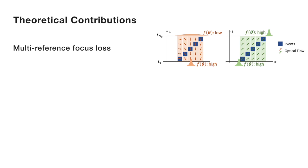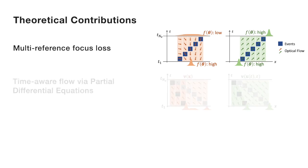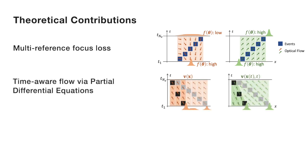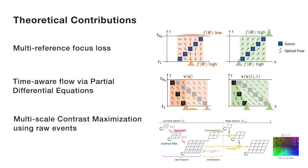Our theoretical contributions are four points. Multi-reference focus loss prevents events from overfitting in the contrast maximization framework. Time-aware optical flow is proposed for event data, which has space-time nature by design, and it handles occlusions better. Using a multi-scale approach on raw events, we improve convergence of the contrast maximization. We develop these principles for model-based methods and demonstrate that they can be transferred to unsupervised deep-learning settings.